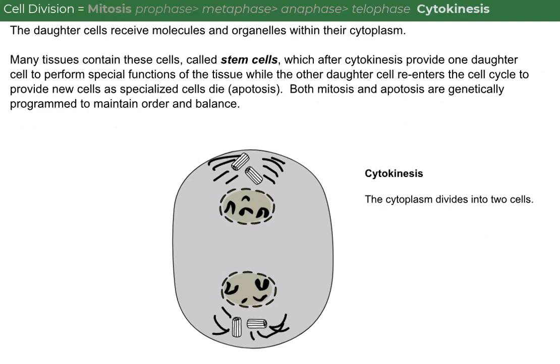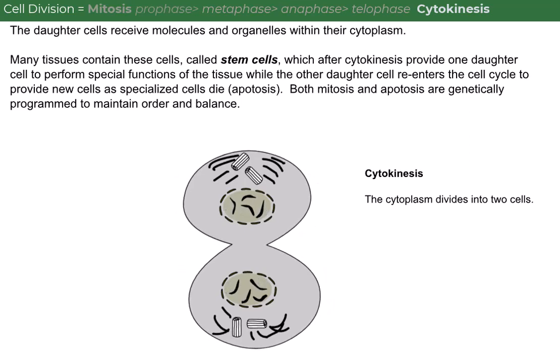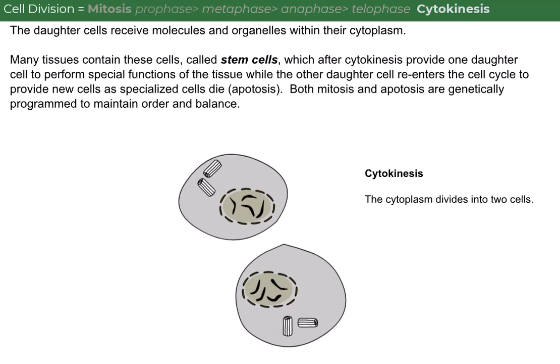The daughter cells receive molecules and organelles within their cytoplasm. Many tissues contain these cells, called stem cells, which after cytokinesis provide one daughter cell to perform special functions of the tissue, while the other daughter cell re-enters the cell cycle to provide new cells as specialized cells die. Both mitosis and apoptosis are genetically programmed to maintain order and balance.